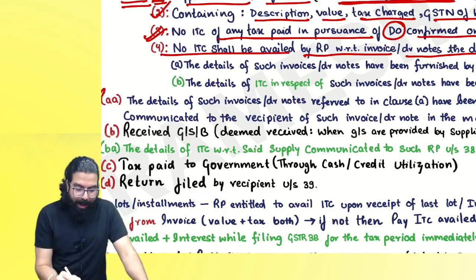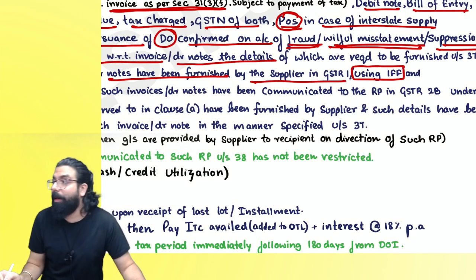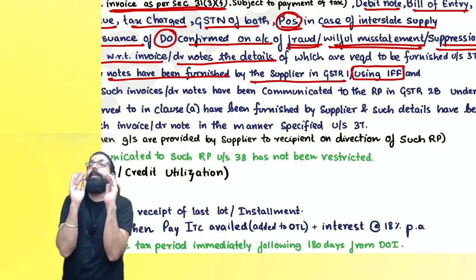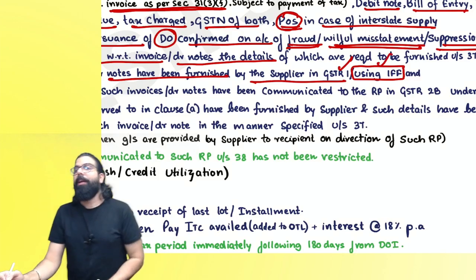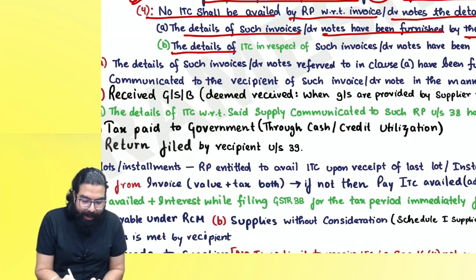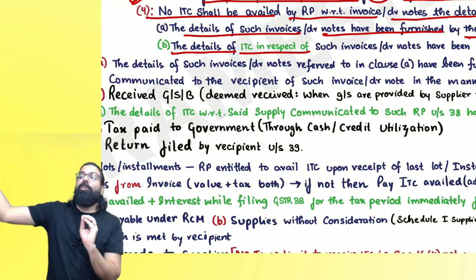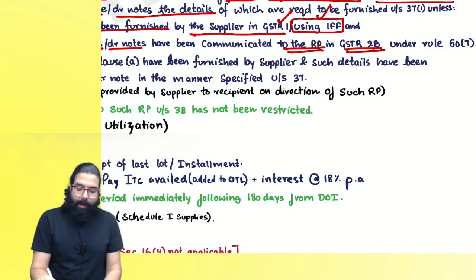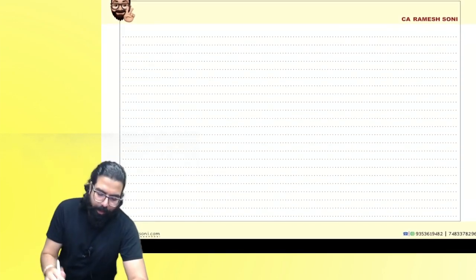The supplier must furnish invoice/debit note details in GSTR-1, or if under quarterly return, through the Invoice Furnishing Facility for the first two months. The details of ITC with respect to such invoice or debit note must be communicated to the registered person in GSTR-2B under Rule 60(7). This is clause AA — it gives statutory backing to the Rule 36 requirement.